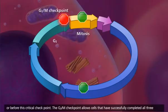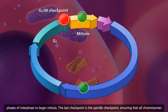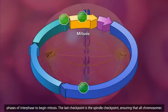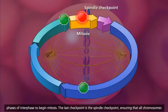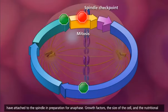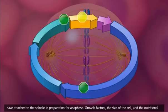The G2M checkpoint allows cells that have successfully completed all three phases of interphase to begin mitosis. The last checkpoint is the spindle checkpoint, ensuring that all chromosomes have attached to the spindle in preparation for anaphase.